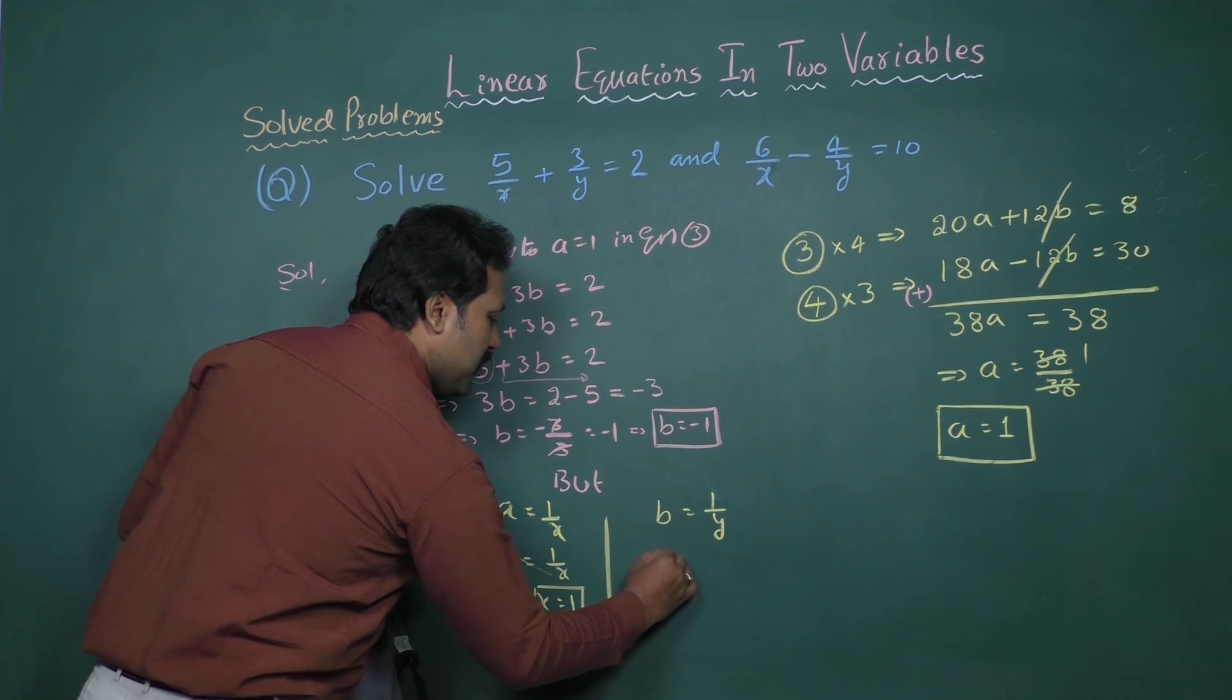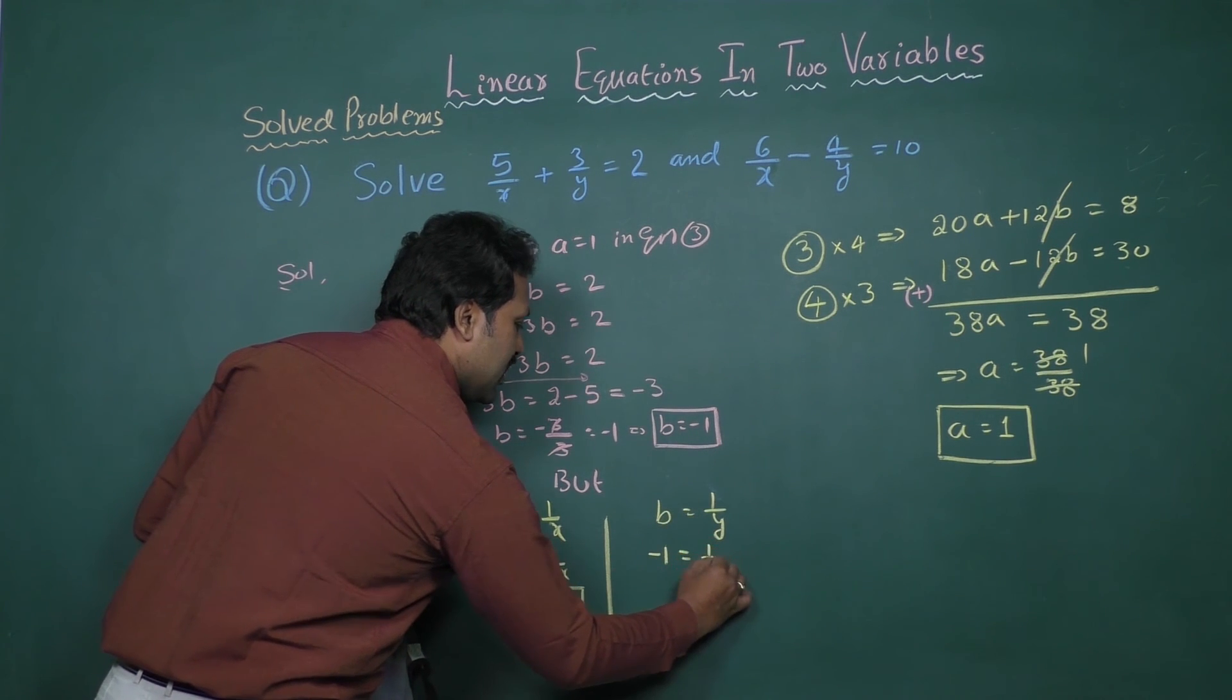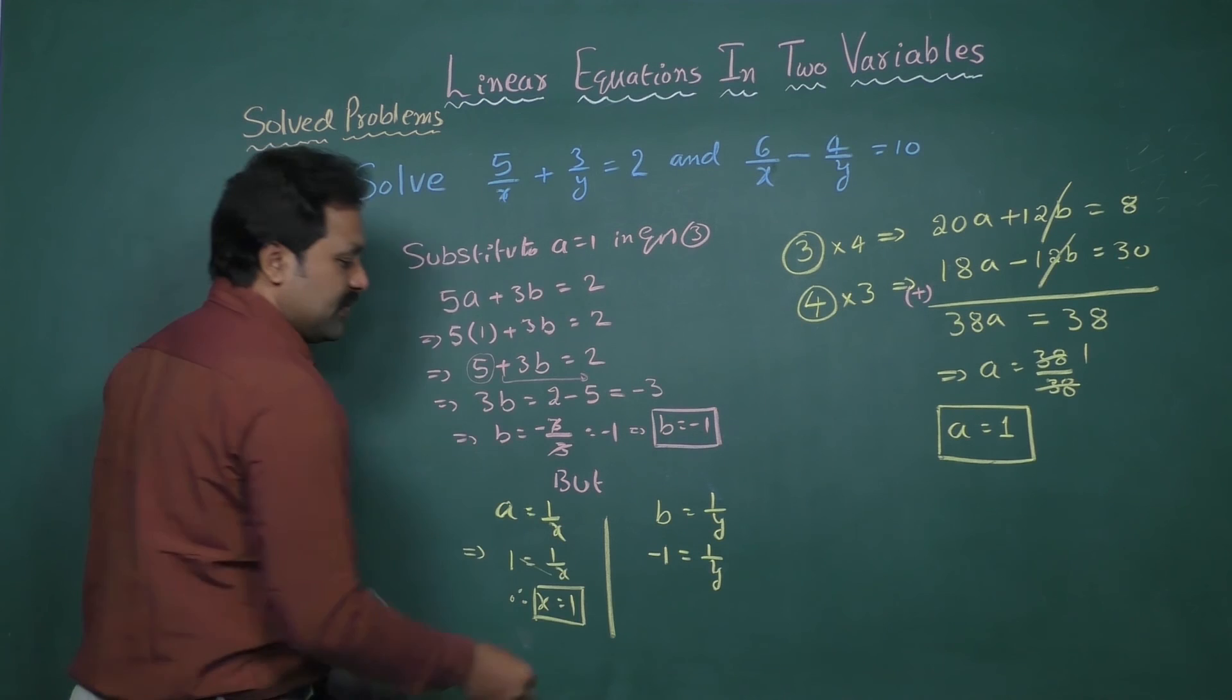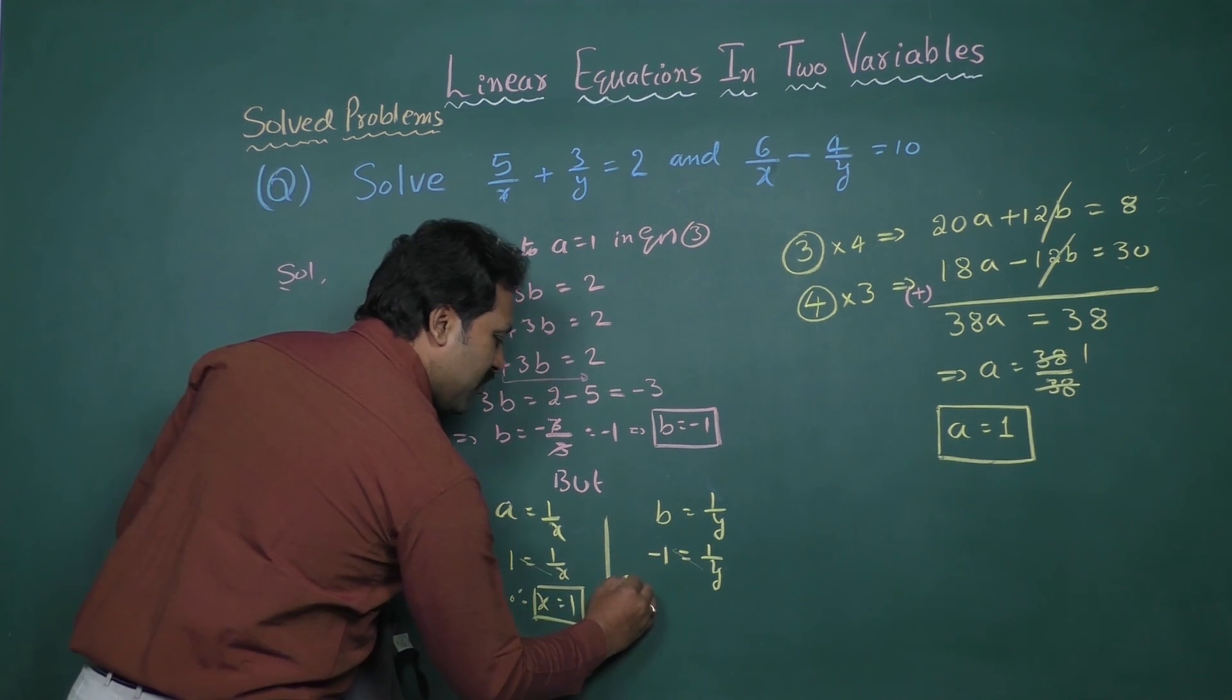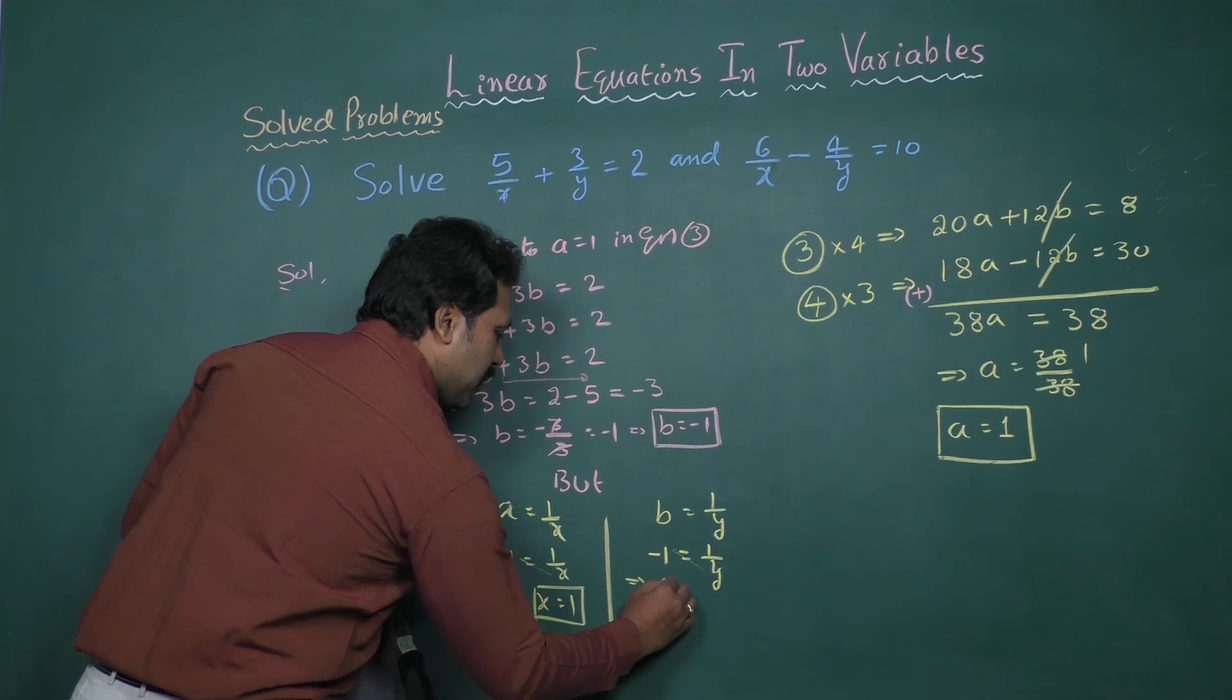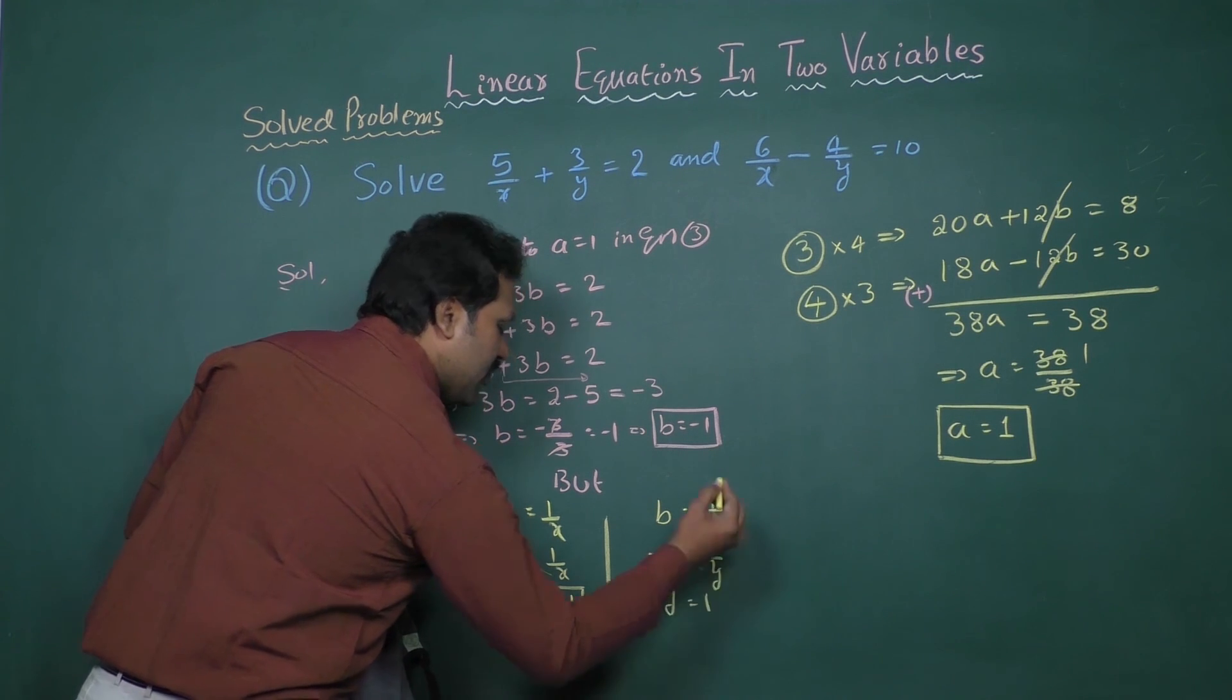b value, minus 1 equal to 1 by y. Take cross multiplication. Then we get minus y equal to 1.